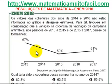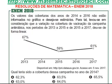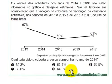O linear vem a ser isso: é uma curva lógica que tem um sentido proporcional, ou seja, são mantidas as proporções. Então, o que ele quer saber é qual teria sido a cobertura dessa campanha no ano de 2014.